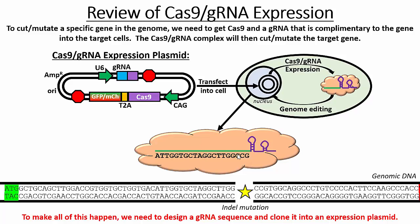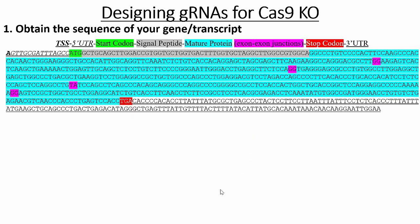That's the overview of Cas9. What we need to make all this work is this gRNA sequence. We need to look into the genome, look at our gene, and select a gRNA that we can use to reliably direct Cas9 to cut in our gene. First things first, you have to know the sequence of your target gene, but you also have to know the structure — where are the exons and introns, where's the start codon, any signal peptides, 5' and 3' UTRs. That's going to help direct you to the best spot for your gRNAs.